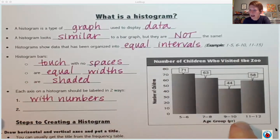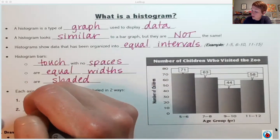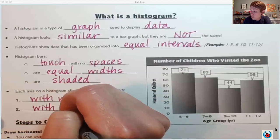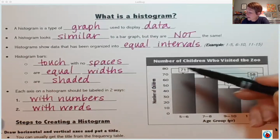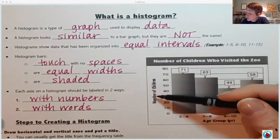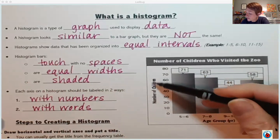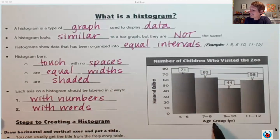The other way you might notice our axes are labeled is with words. I need to know what those numbers represent. The labels on this histogram tell me that these numbers represent the number of children who visited the zoo on this chart and that down here is their ages. Labels are super important just like they always are in math.